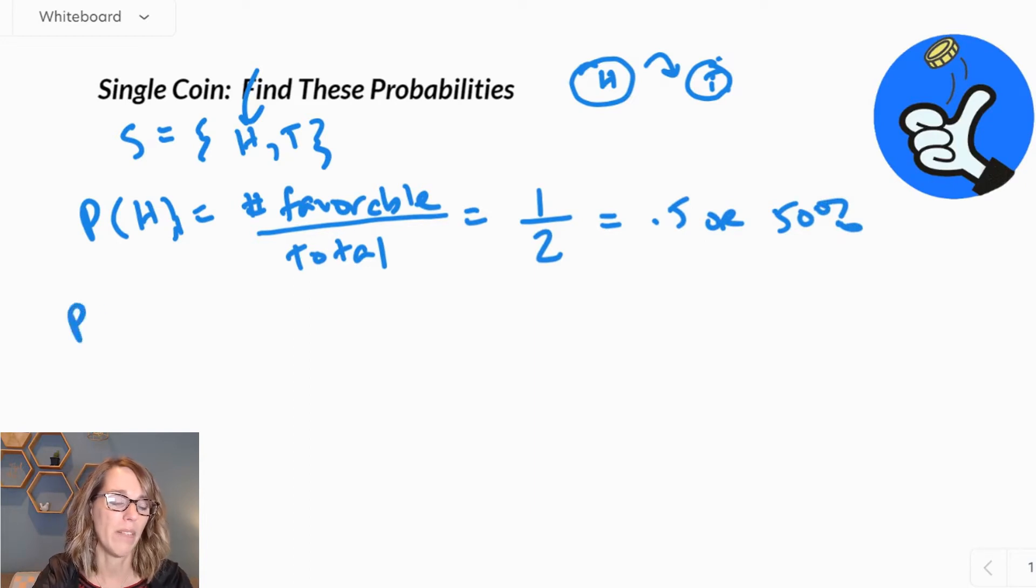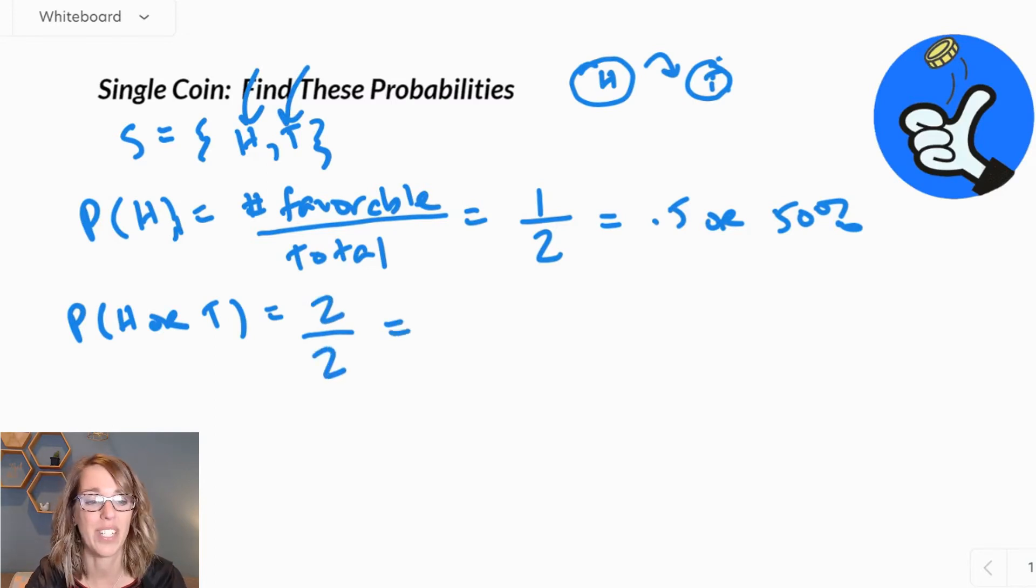Let's say that we wanted the probability of getting either heads or tails. Well, if you think about it, no matter how you toss this coin, you are going to end up with either heads or tails. It's a 100% chance. It's a certain thing. If I break it down, though, now I've got both of these favorable outcomes. So I have two favorable outcomes out of the total, which is going to give me two out of two, which is one or 100%.